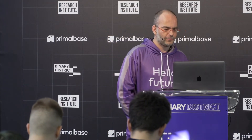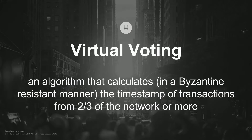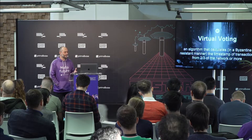This has been formally proven — the mathematics behind the algorithm have gone through independent assessment with the Coq proof assistant. For those interested, all results are available on our website. So, virtual voting — what do we mean by it, how does it work, and why is it so good? For me, virtual voting is an algorithm that calculates, in a Byzantine-resistant manner, the timestamp of transactions from two-thirds of the network or more.